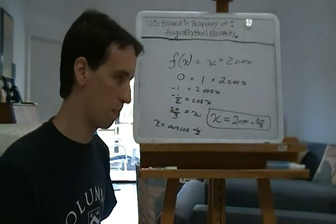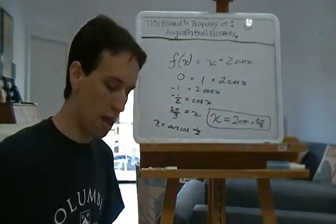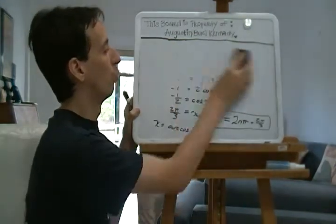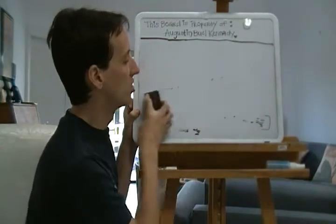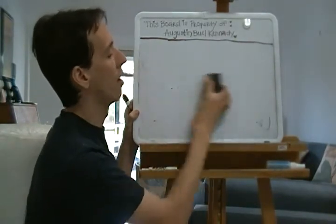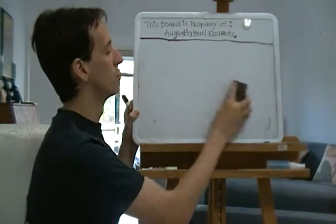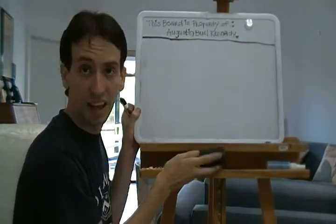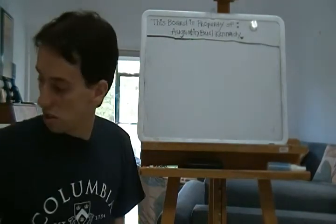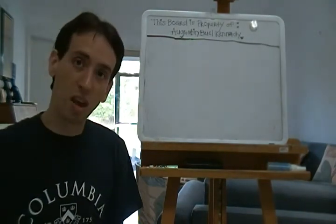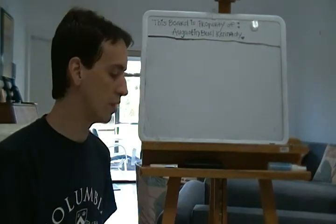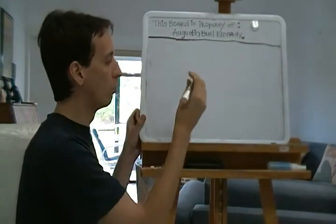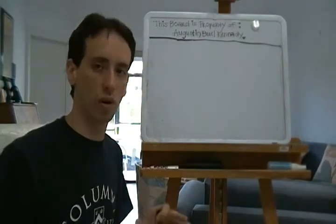Moving right along — today we're looking at the chain rule. When we examined the product rule, we had the question of whether the product of derivatives equals the derivative of a product. We found that's not the case. But this notion of a product does come into play when dealing with derivatives of composite functions. So, the chain rule — I'm going to write it out.